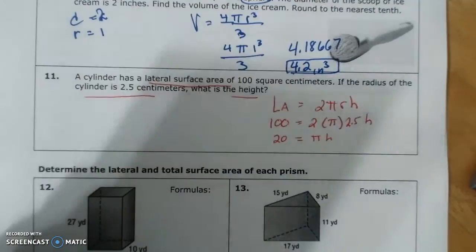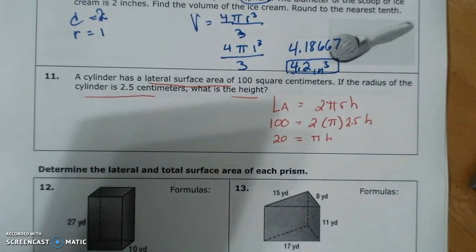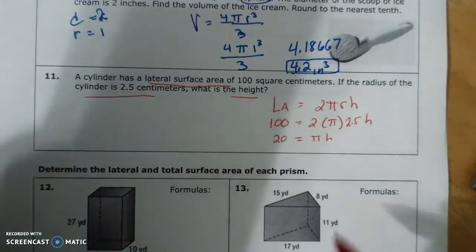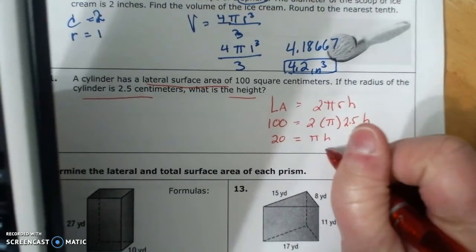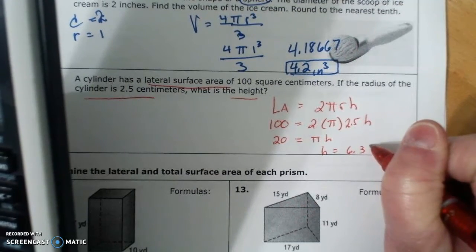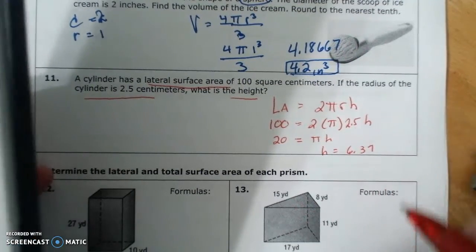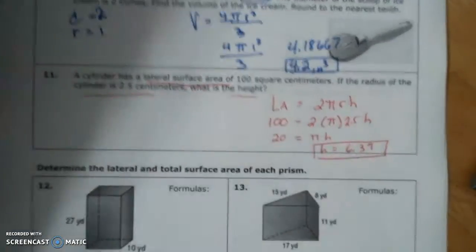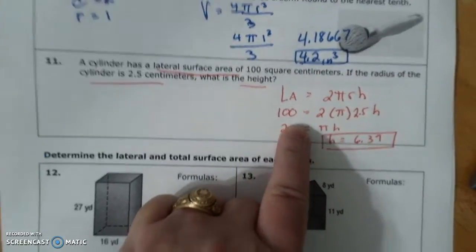And then I'm going to divide 20 divided by 3.14. So h equals 6.369, which would be 6.37 to the nearest hundredths. Okay, so if you don't, I'll go over this one again.